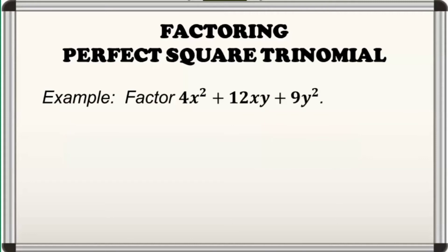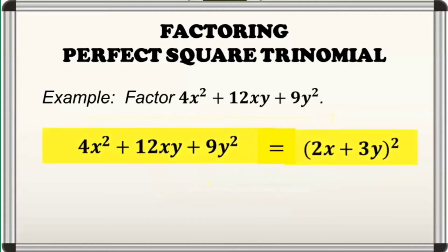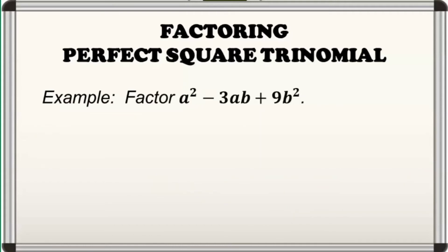Second example, let's factor 4x squared plus 12xy plus 9y squared. You can verify that it is a PST, so we may now proceed in factoring it out. The square roots of the first and last terms are 2x and 3y respectively. Using these square roots as well as the sign of the middle term, we have the square of binomial quantity 2x plus 3y squared. And it is the factored form of our PST 4x squared plus 12xy plus 9y squared.